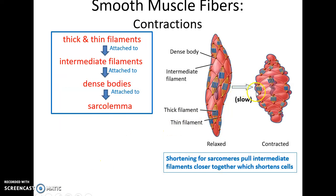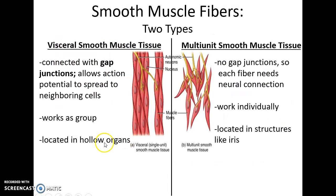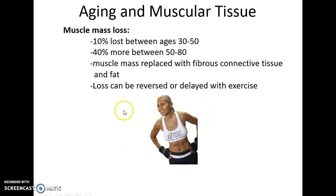Smooth muscle tissue has short, tapering cells with one nucleus, is involuntarily controlled, has autorhythmicity, and only has endomysium. It has very little sarcoplasmic reticulum, no transverse tubules, and no striations. It contracts by having thick and thin filaments arranged in a scattered pattern throughout the cell; these attach to intermediate filaments of the cytoskeleton, which attach to dense bodies in the plasma membrane, causing the cell to shorten — though it is slower and generates less force. Smooth muscle fibers can be arranged so that one signal propagates through gap junctions to all cells, or each fiber can require its own neuron.